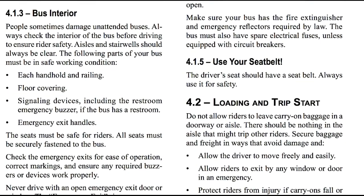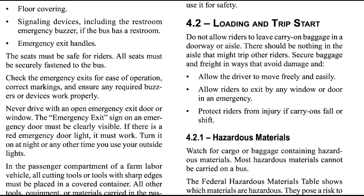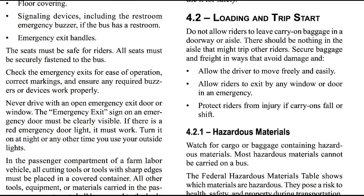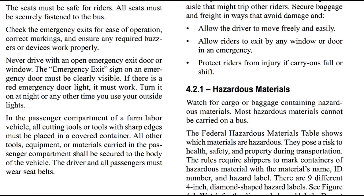The Bus Interior: People sometimes damage unattended buses. Always check the interior of the bus before driving to ensure rider safety. Aisles and stairways should always be clear. The following parts of your bus must be in safe working condition: each handhold and railing, the floor covering, signal devices including the restroom emergency buzzer if the bus has a restroom, and emergency exit handles. All seats must be securely fastened to the bus. Check the emergency exits for ease of operation, correct markings, and ensure that the required buzzers or devices work properly. Never drive with an open emergency door or window. The emergency exit sign on the emergency door must be clearly visible. If there is a red emergency door light, it must work. Turn it on at night or any other time you use your outside lights.